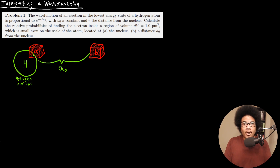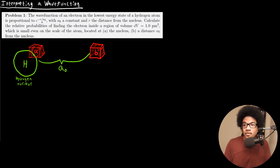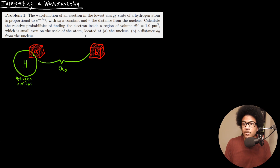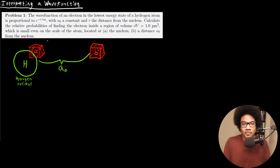In this video, we're going to look at an example problem where we use what we learned in a previous video to interpret a wave function. The wave function of an electron in the lowest energy state of a hydrogen atom is proportional to e to the negative r over a-naught, with a-naught being a constant and r the distance from the nucleus. We need to calculate the relative probabilities of finding the electron inside a region of volume dV equals 1.0 picometers cubed, which is small even on the scale of an atom, at the nucleus and at a distance a-naught from the nucleus.